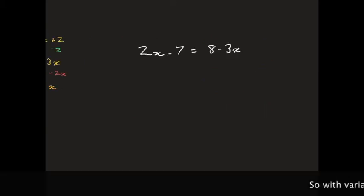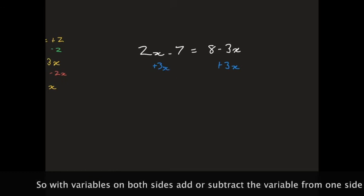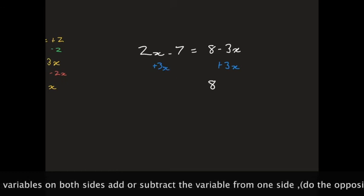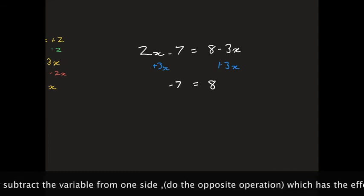Okay, a final sum. 2x minus 7 equals 8 minus 3x. I'm going to add 3x to both sides of the equation. On the left-hand side, that will give me 2x plus 3x equals 5x minus 7. And on the right-hand side, I get 8.